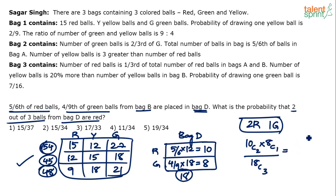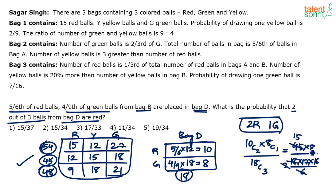Simplifying: 10C2 = 45, multiplied by 8C1 = 8 gives 360. Divided by 18C3: 18 × 17 × 16 / 6 = 816. Cancelling: 360/816 = 15/34. So the probability that 2 of the 3 drawn balls from bag D are red is 15/34, which is option 2.